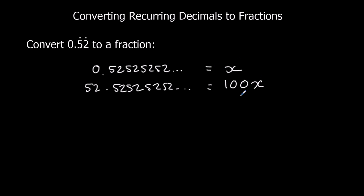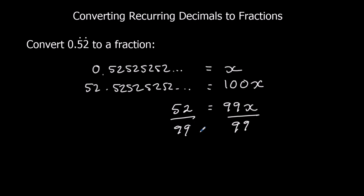Then I'll do the bottom one take away the top one. A hundred of them take away one of them is ninety-nine of them. And 52.525252... take away 0.525252... is just 52. Divide both sides by ninety-nine, and x equals fifty-two over ninety-nine. They are not in the same times table, so it doesn't simplify. So 0.52 recurring equals 52 over 99.